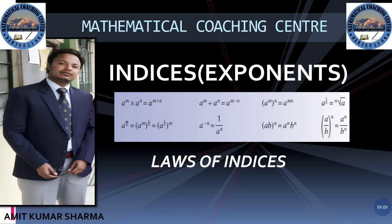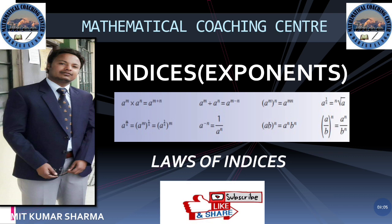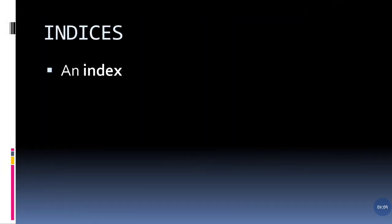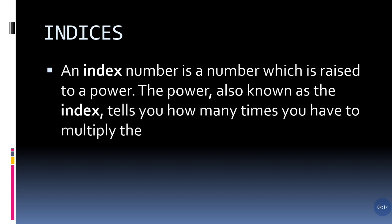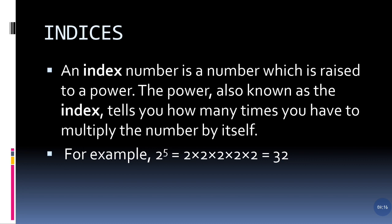Hello and welcome to my channel Mathematical Coaching Center. In today's class we will do laws of indices from the chapter indices or exponents. An index number is a number which is raised to a power. For example, 2 to the power 5 means 2 into 2 into 2 into 2 into 2, five times, which gives us 32. This type of expression is called indices.